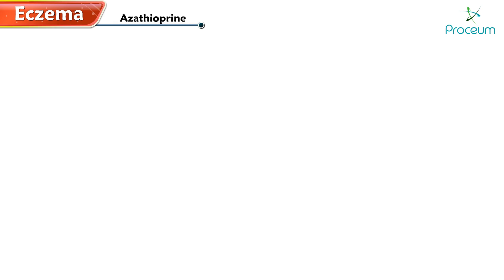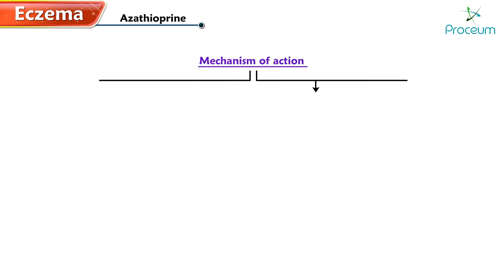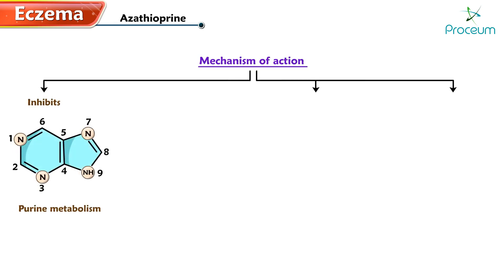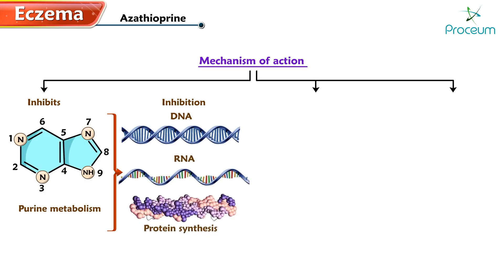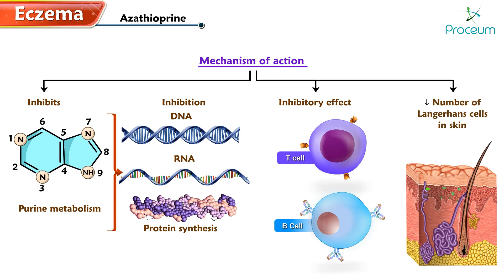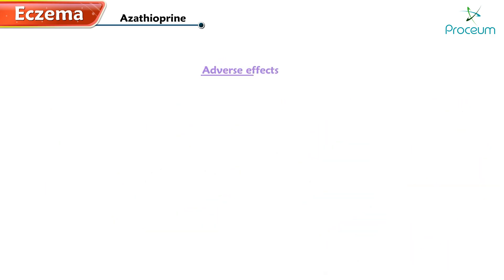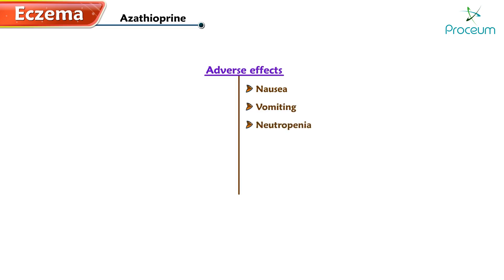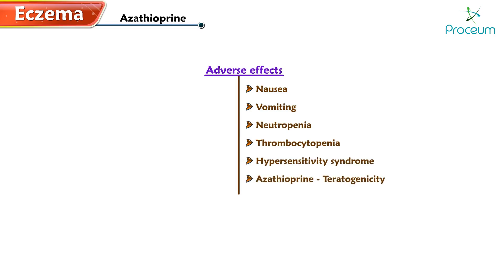Now let's learn about azathioprine. Its mechanism of action involves inhibiting purine metabolism, leading to the inhibition of DNA, RNA, and protein synthesis. It exerts an inhibitory effect on both T and B cell function, and also decreases the number of Langerhans cells in the skin, resulting in immunosuppression. Adverse effects include nausea and vomiting, neutropenia and thrombocytopenia, hypersensitivity syndrome, and teratogenicity.